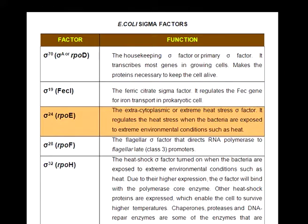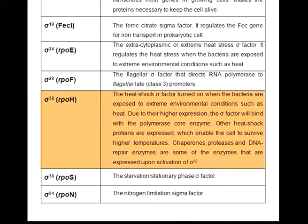Sigma 24, also called RPO-E, regulates heat stress when bacteria are exposed to extreme environmental conditions such as heat. Sigma 28, or RPO-F, is the flagellar sigma factor that directs RNA polymerase to flagellar late promoters. Sigma 32, or RPO-H, is the heat shock sigma factor, turned on when bacteria are exposed to extreme heat. Due to their higher expression, the sigma factor will bind with the polymerase core enzyme. Other heat shock proteins are expressed enabling the cell to survive higher temperatures. Chaperones, proteases and DNA repair enzymes are expressed upon activation of sigma 32.